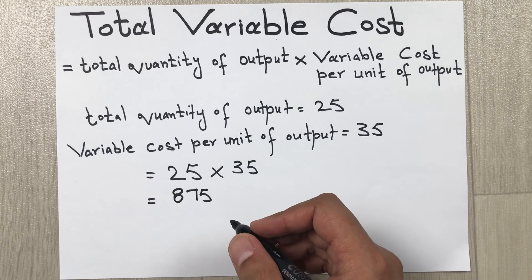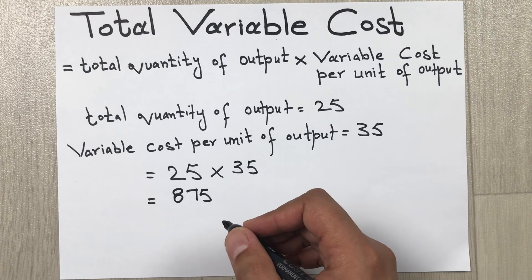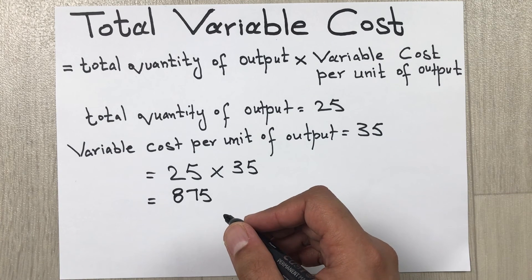We call it variable cost because variable cost can increase or decrease as you make more quantity or less quantity of your product.